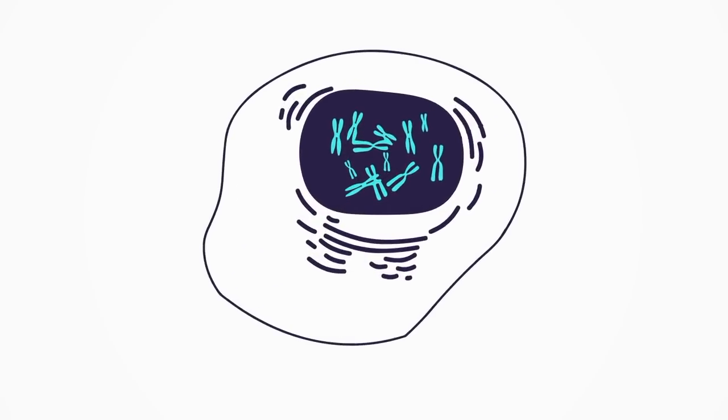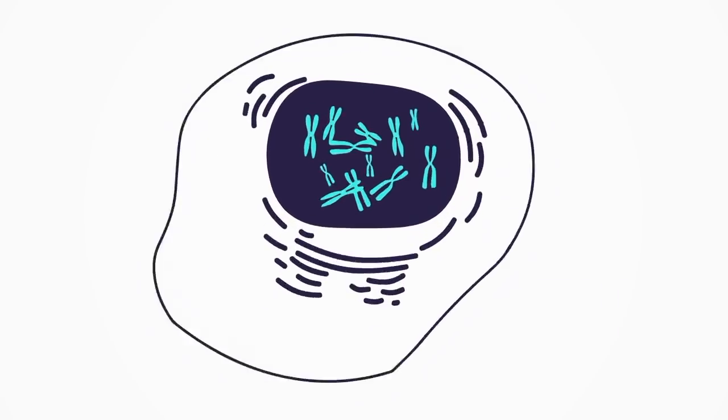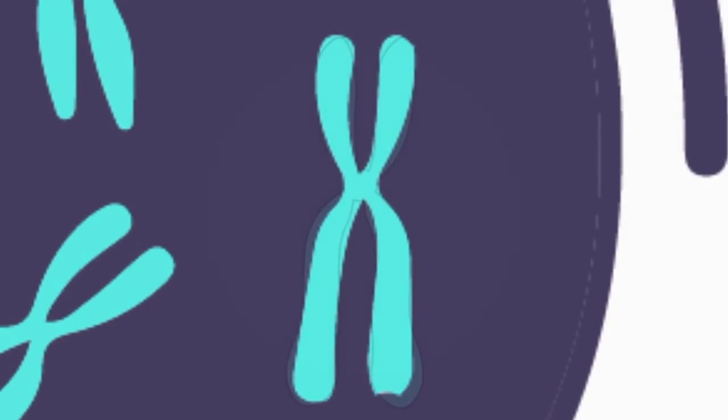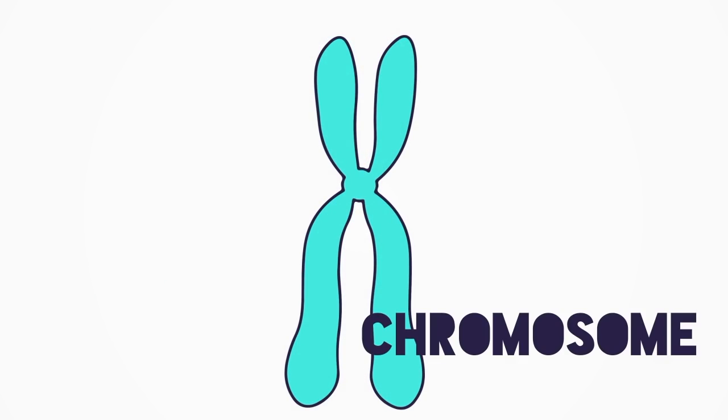What is genetics and what are they actually looking at when you do a test? So we're going to start out with cells. Our body is made up of things called cells — we have trillions of them — and in every single cell we have things called chromosomes, which are actually packages of information.